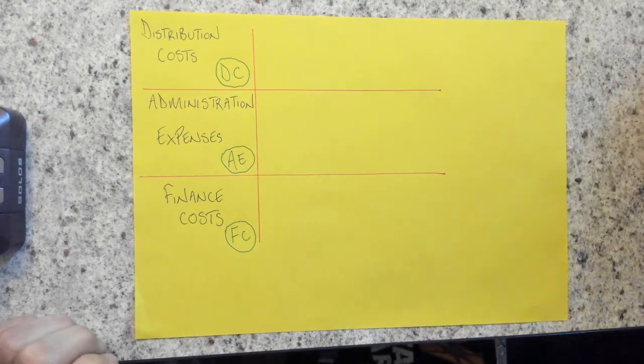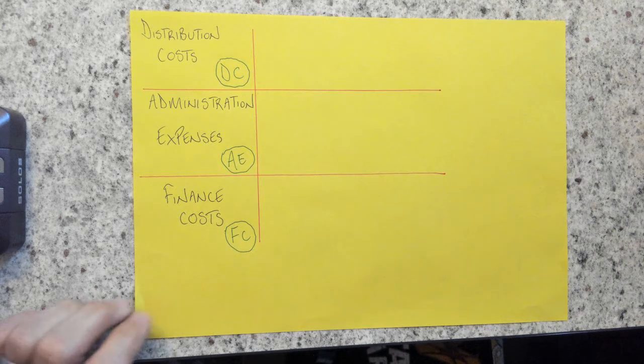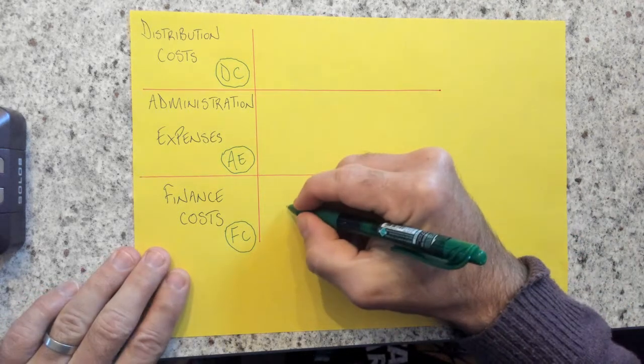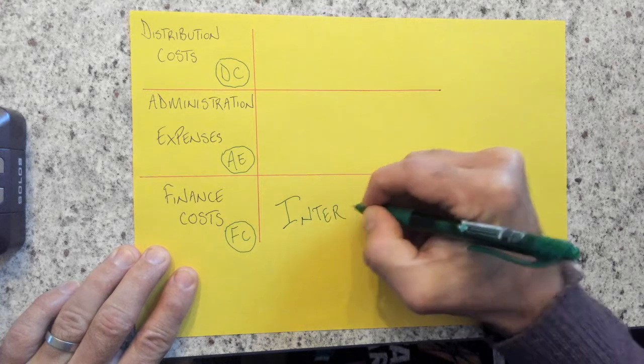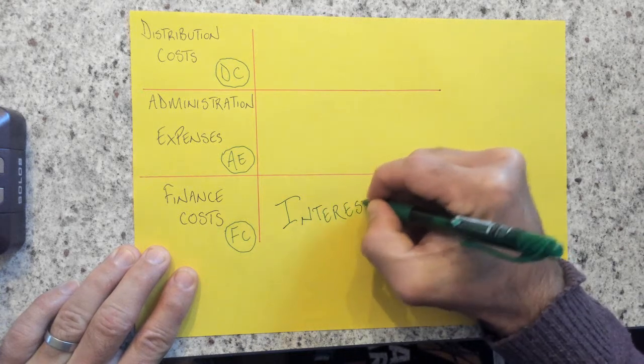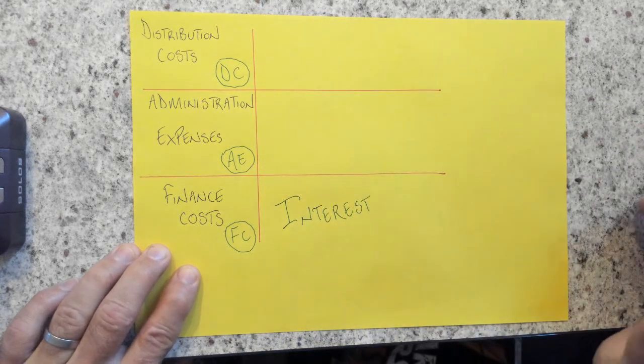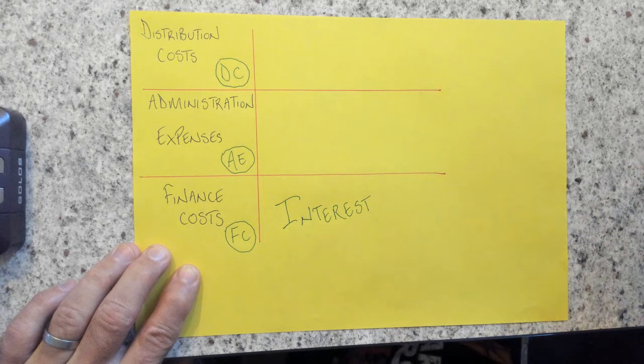Now, typically when I do this, I always try and look for my finance cost first. And you're looking for one keyword. And that keyword is interest. So anything to do with interest on the left hand side of the trial balance will be a finance cost.